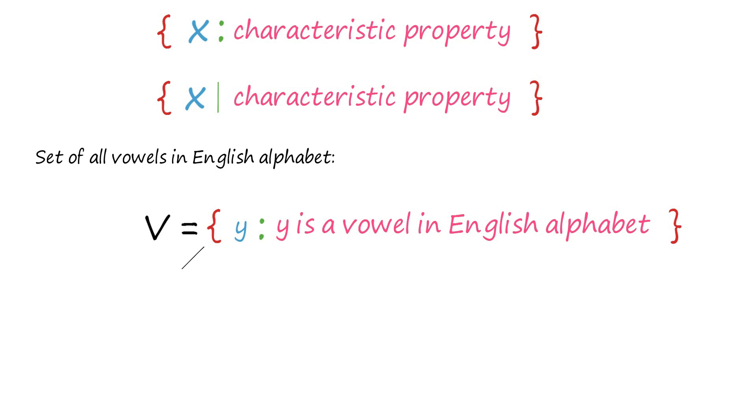Here, the braces stand for the set of all, and the colon stands for such that. Therefore, the above description of the set V is read as: the set of all y such that y is a vowel in English alphabet.